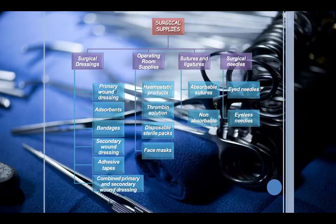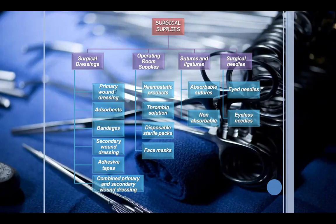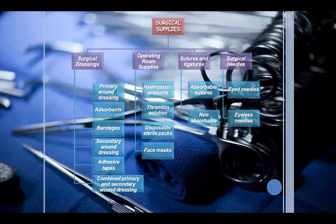Surgical supplies have four classes: surgical dressings, operating room supplies, sutures and ligatures, and surgical needles. Surgical dressings contain primary wound dressings, absorbent bandages as secondary wound dressings, adhesive tapes, and combined primary and secondary wound dressings. Operating room supplies include hemostatic products, thrombin solutions, disposable trial packs, and face masks. Sutures and ligatures contain absorbable and non-absorbable types. Surgical needles include eyed needles and eyeless needles.